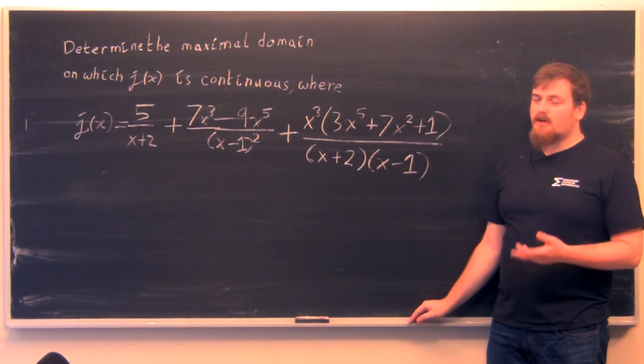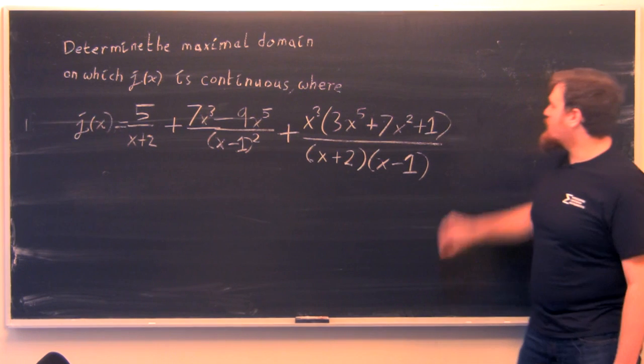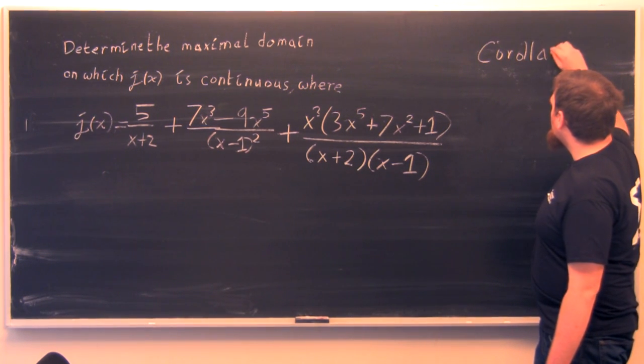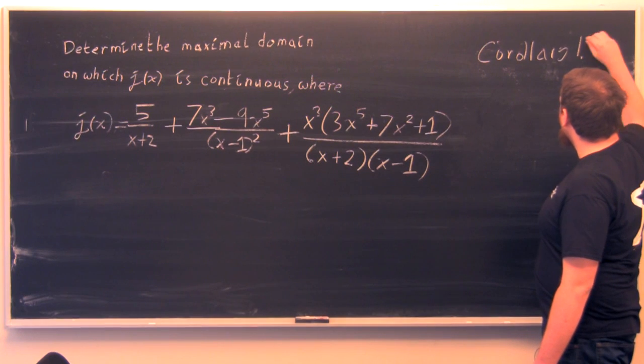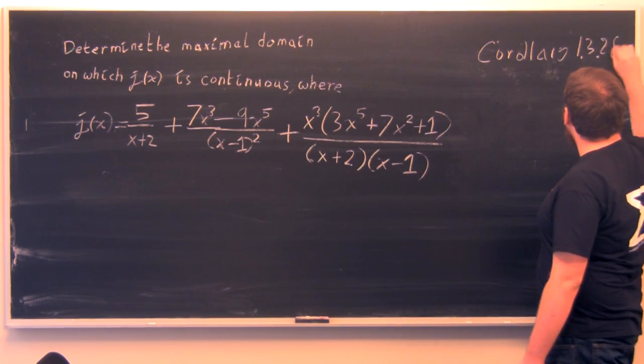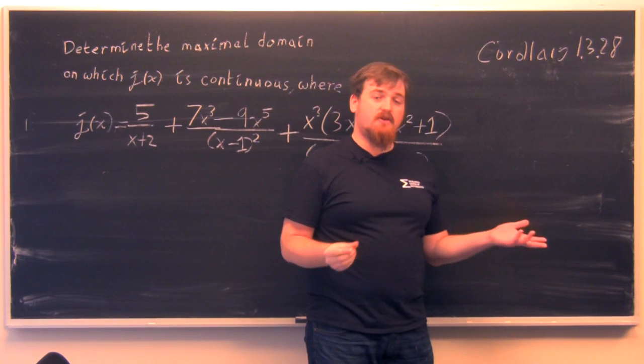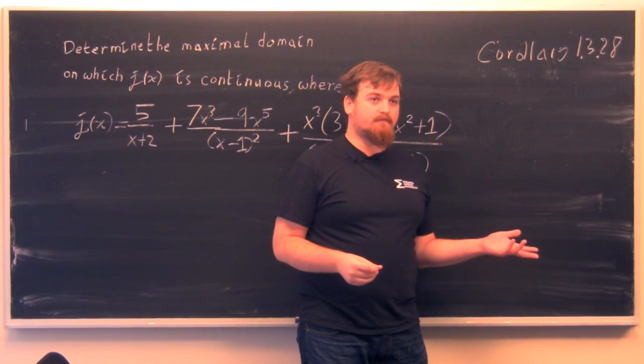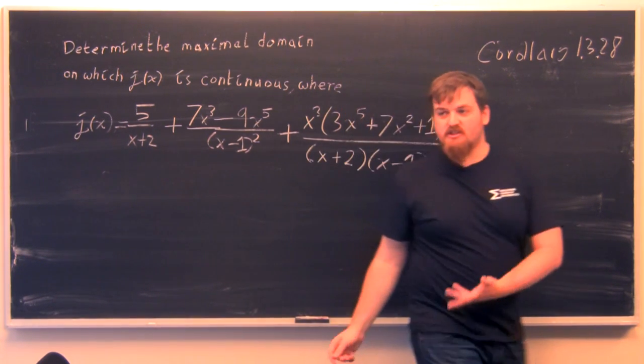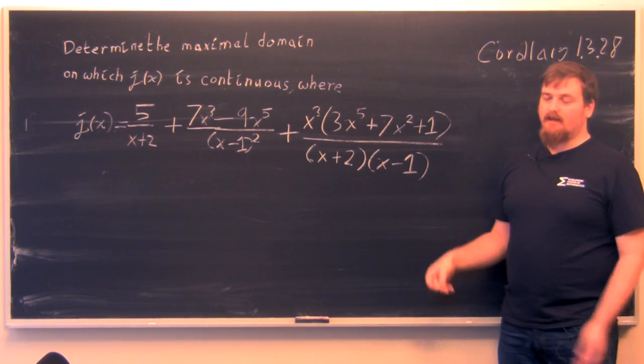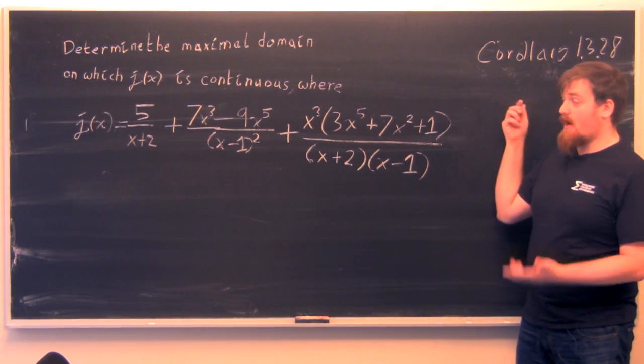And because it's a rational function, we can apply corollary 1.3.28, which states that all rational functions are continuous everywhere they're well-defined. So because of this, we just need to figure out the maximal domain on which j(x) is well-defined, because it has to be continuous there according to corollary 1.3.28.